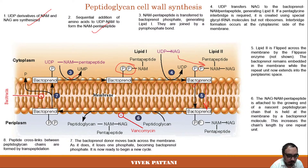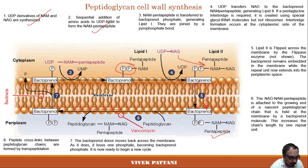The NAG-NAM pentapeptide is then attached to the growing nascent peptidoglycan chain held at the membrane by bactoprenol, increasing chain length by one repeat unit. As this unit is added, bactoprenol phosphate is freed again and the NAG-NAM pentapeptide joins the peptidoglycan layer, forming a new layer.